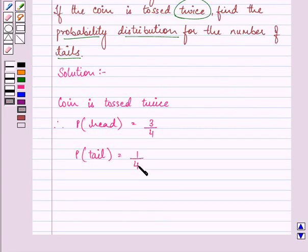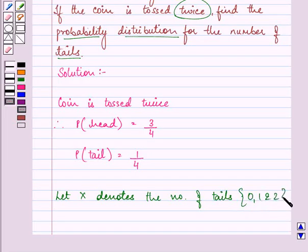Now let X be the random variable which denotes the number of tails. And X can take the values of zero, one and two.